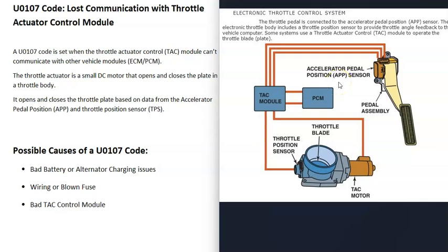When you get a U0107 code, for some reason the main computer — which could be a powertrain control module or engine control module — is not able to communicate with it. The PCM or ECM is sending out this U0107 code, and it's going to need troubleshooting to find out why.